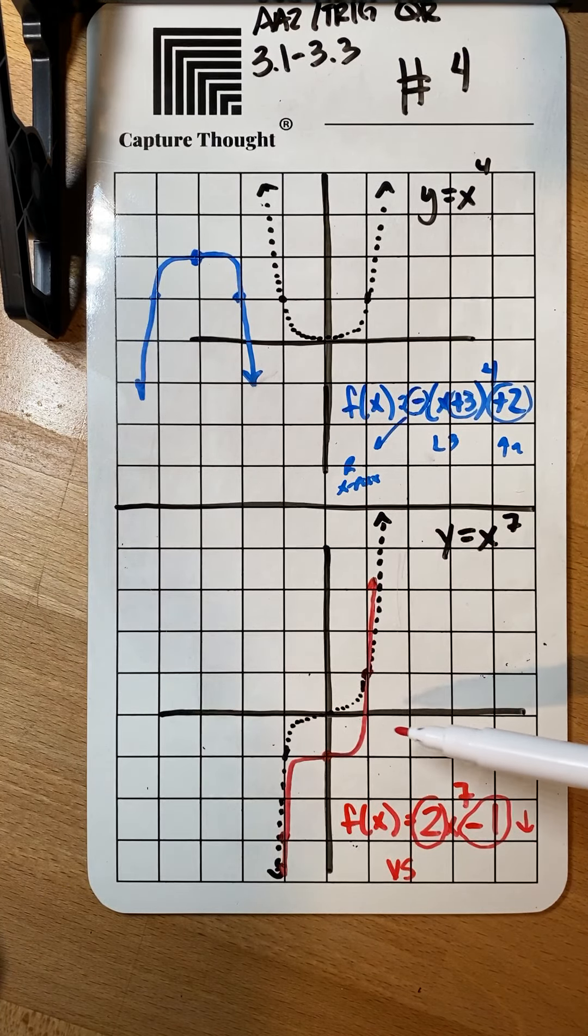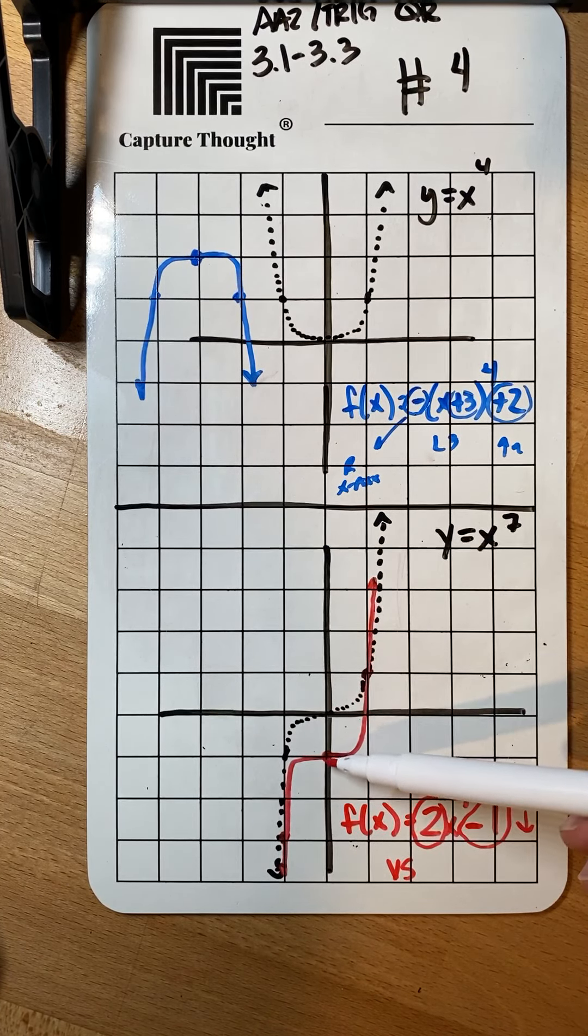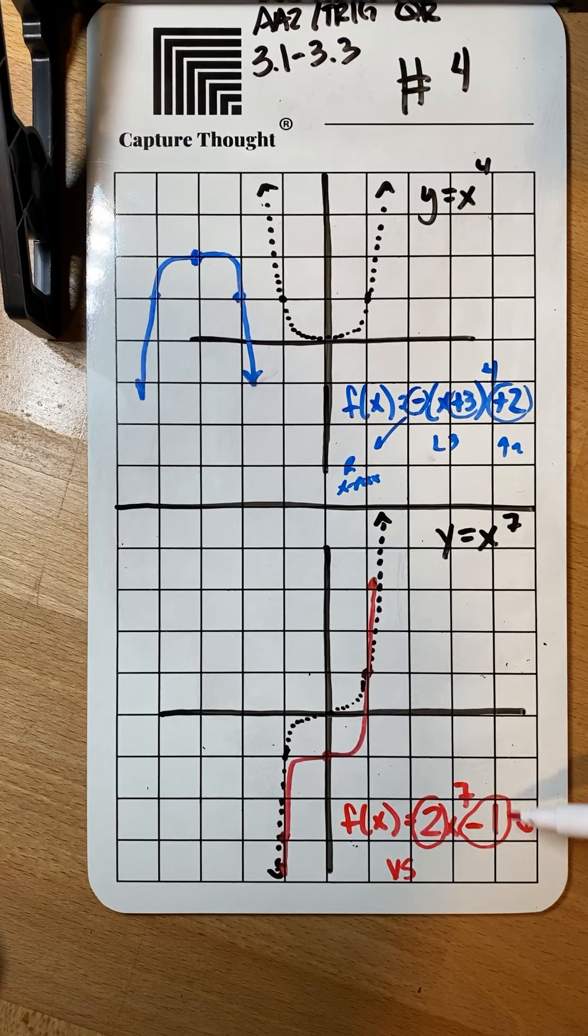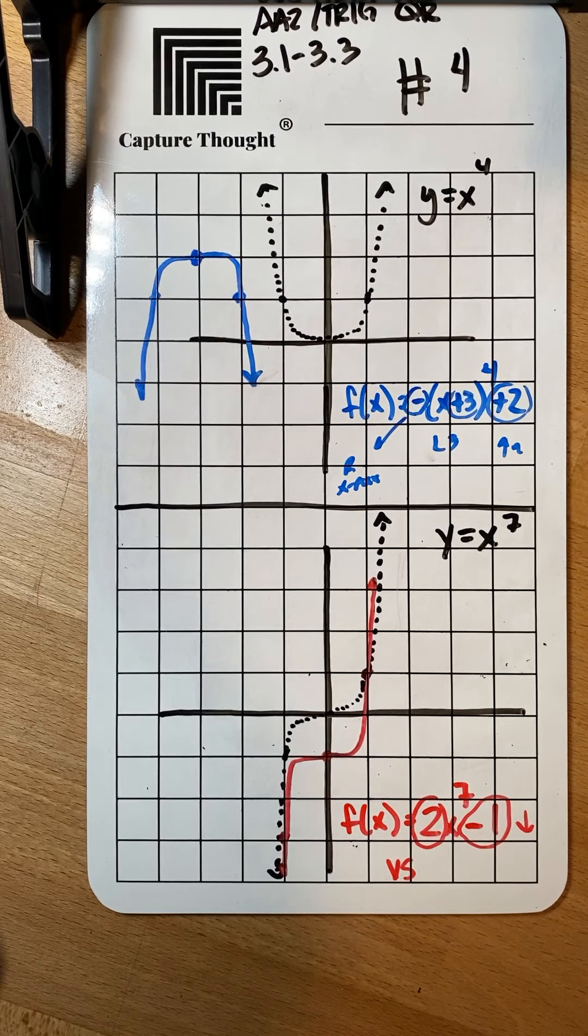So again it's just a quick sketch but as long as you're giving me points that I can clearly see and you're describing what's happening in the function then you're doing it correctly.